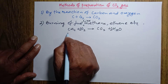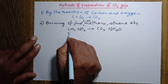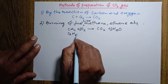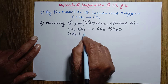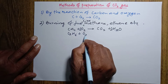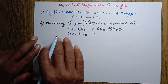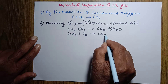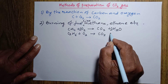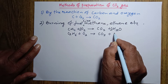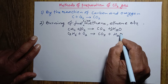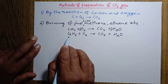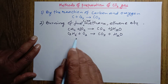Now another one: ethane. Ethane's molecular formula is C₂H₆. When ethane burns in air, it reacts with oxygen. Ethane reacts with oxygen to form carbon dioxide gas, and another product is also there — water. This is the reaction of ethane with oxygen.